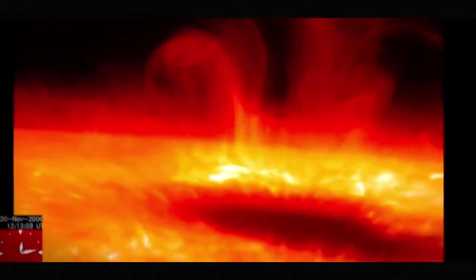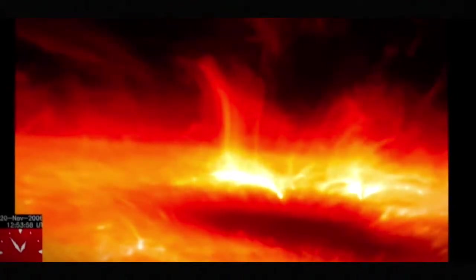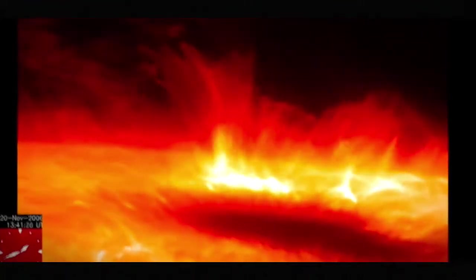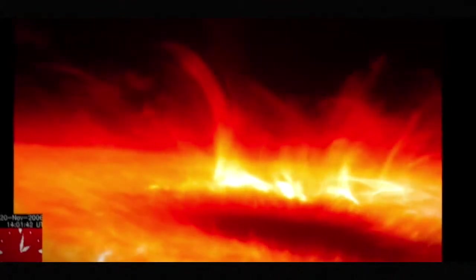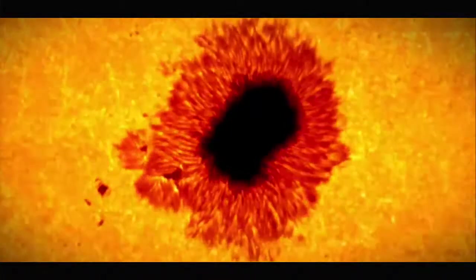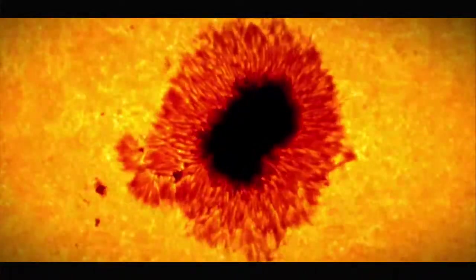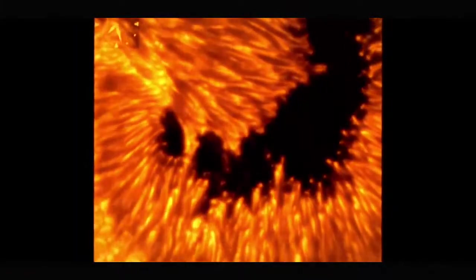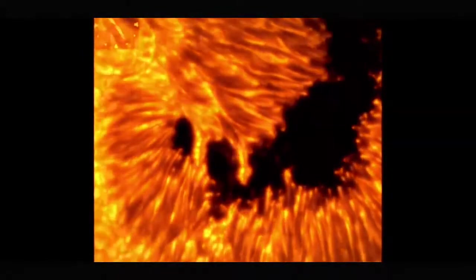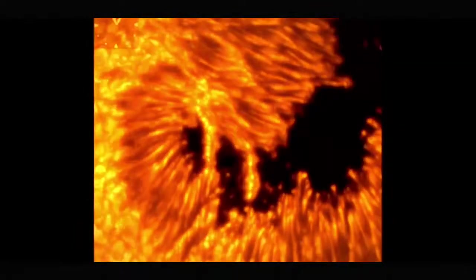Thanks to the clarity of Hinode's images, various phenomena have been revealed to be occurring around the sunspots. This sunspot is 20,000 kilometers wide. Flames reaching 10,000 degrees Celsius erupt and flicker around the sunspot. The dark ring that frames the sunspot is called a penumbra. When closely examined, the stripes of the penumbra can be seen to flow alternately in opposite directions. The lighter stripes flow towards the sunspot center, while the darker parts flow out.